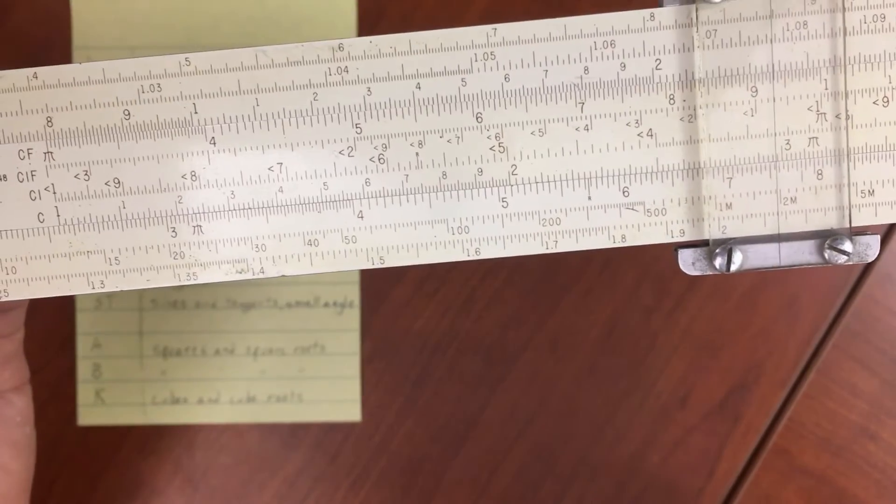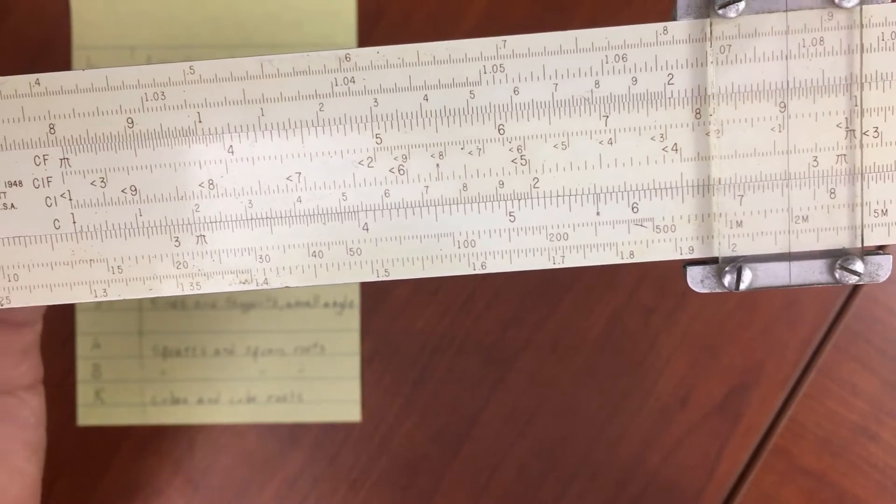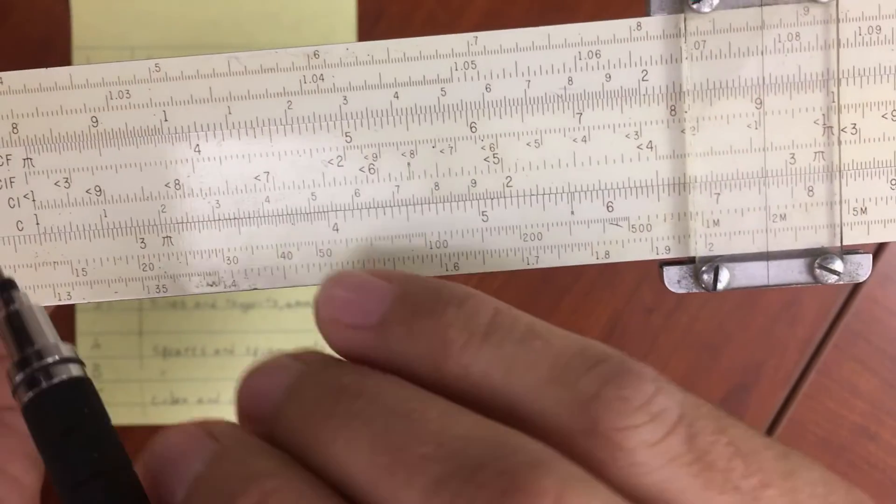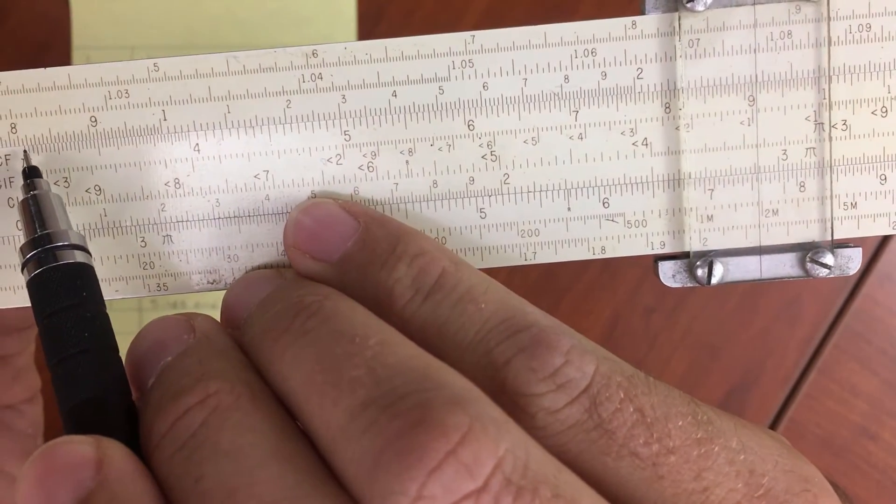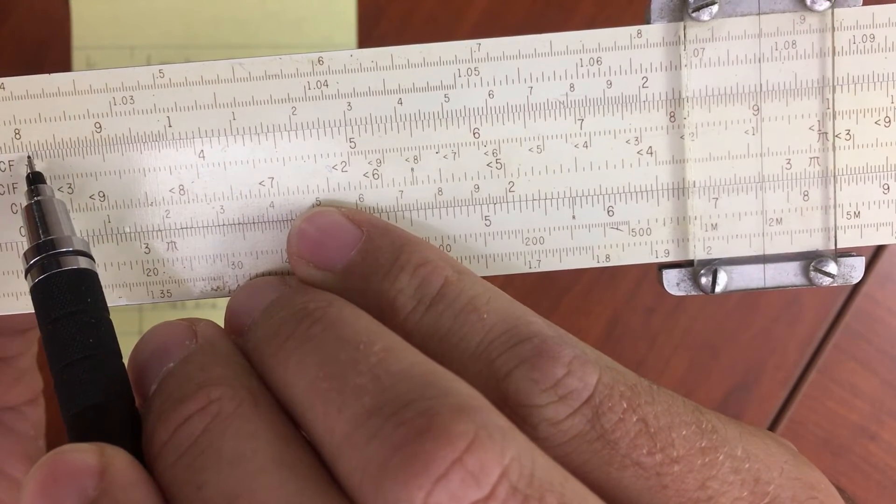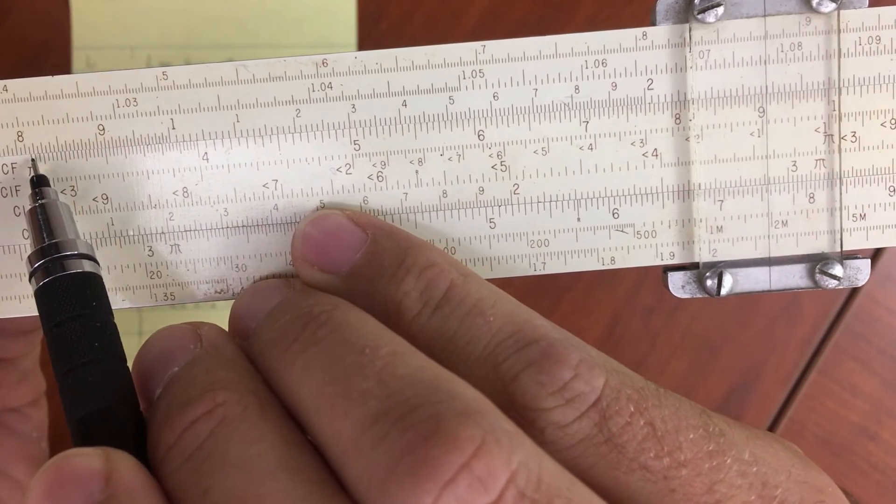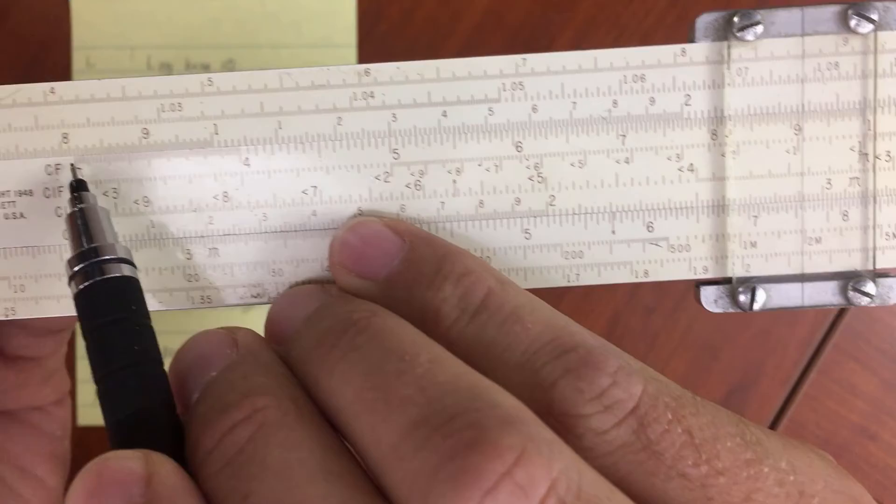And of course if I move to something like 2.6, then I can again read off that this is going to be about 8.16, something like that—8.16, 8.17, somewhere in there.